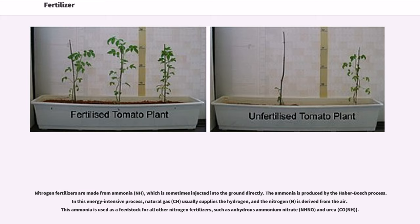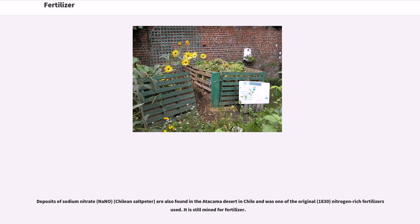Nitrogen fertilizers are made from ammonia (NH₃), which is sometimes injected into the ground directly. The ammonia is produced by the Haber-Bosch process. In this energy-intensive process, natural gas (CH₄) usually supplies the hydrogen, and the nitrogen (N₂) is derived from the air. This ammonia is used as a feedstock for all other nitrogen fertilizers, such as anhydrous ammonium nitrate (NH₄NO₃) and urea (CO(NH₂)₂). Deposits of sodium nitrate (NaNO₃), or Chilean saltpeter, are also found in the Atacama Desert in Chile and were one of the original (1830s) nitrogen-rich fertilizer sources. It is still mined for fertilizer.